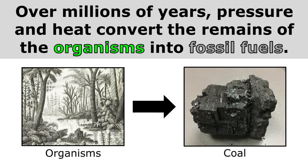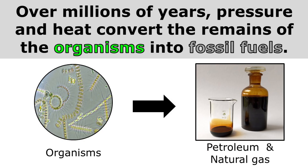The remains of trees and plants that once lived in ancient swamps and marshes are what eventually became coal. And the remains of plankton that lived in oceans long ago are what eventually became petroleum and natural gas.